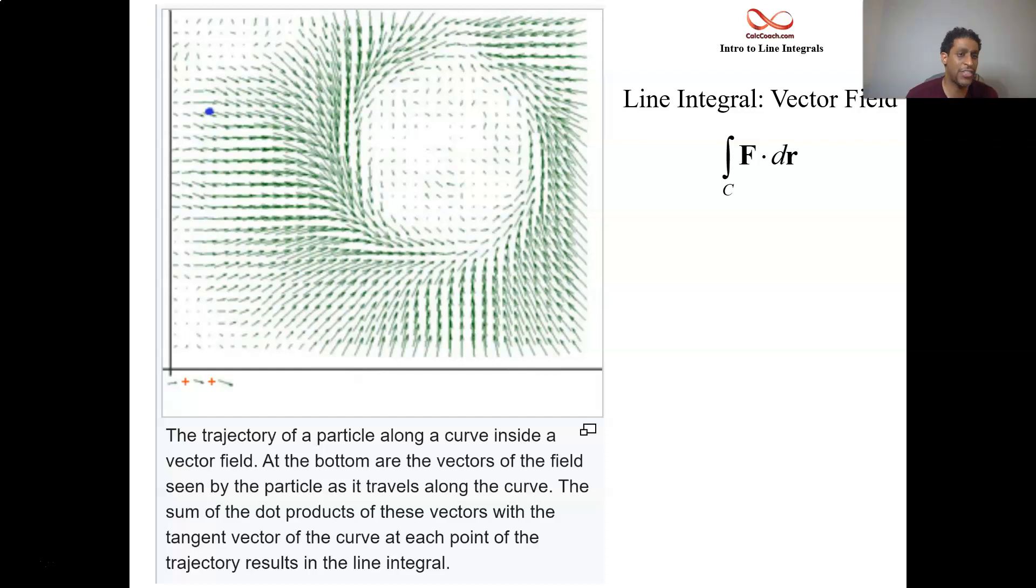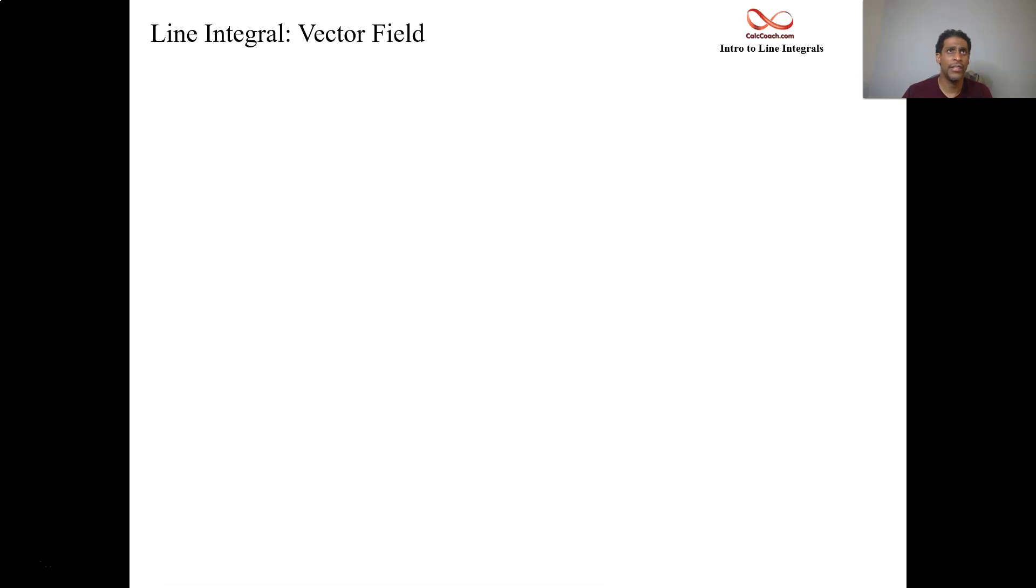We're looking at the dot product of these vectors with the tangent vector to the curve at those distinct points marked off on the curve. That's the visual example.